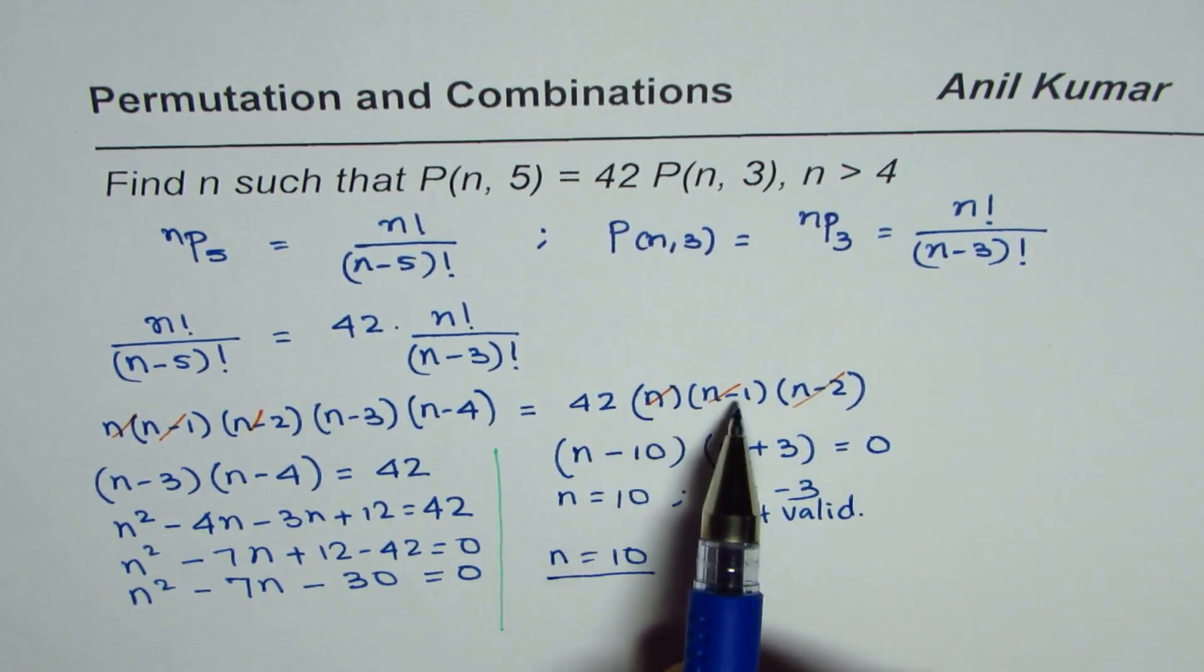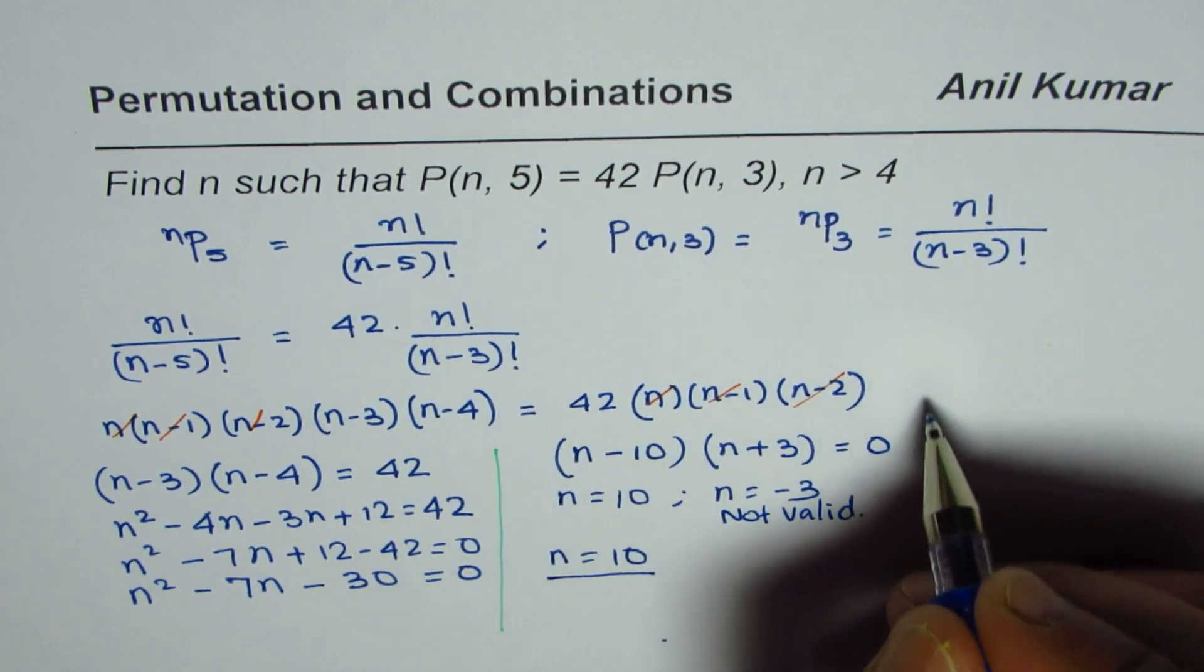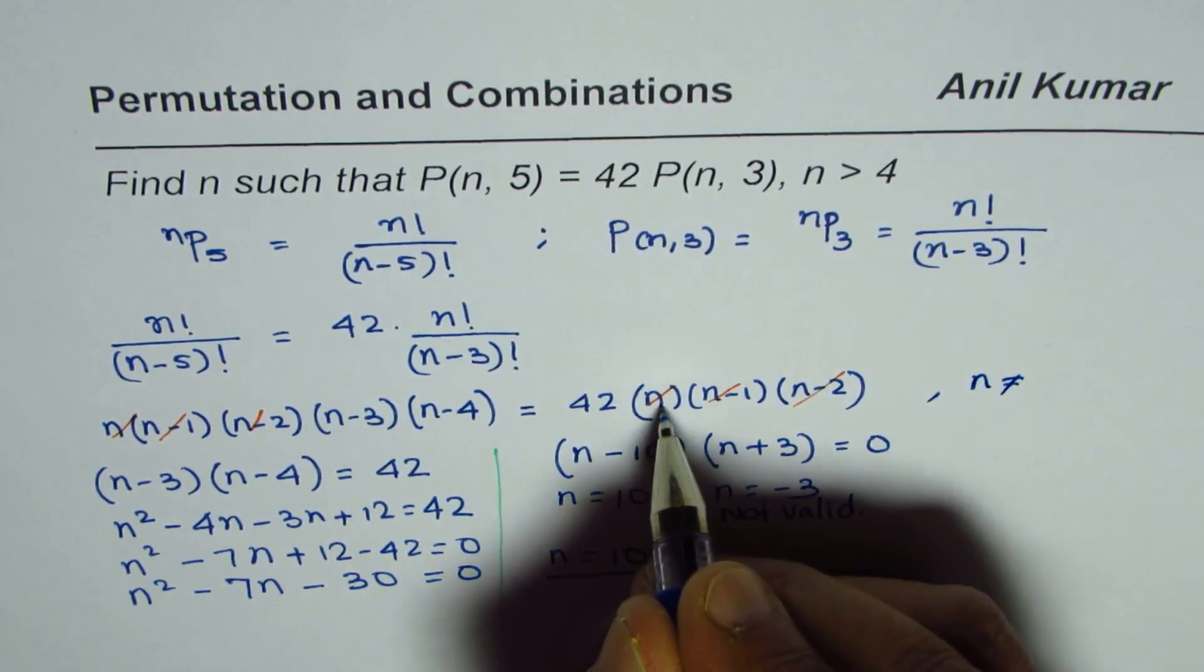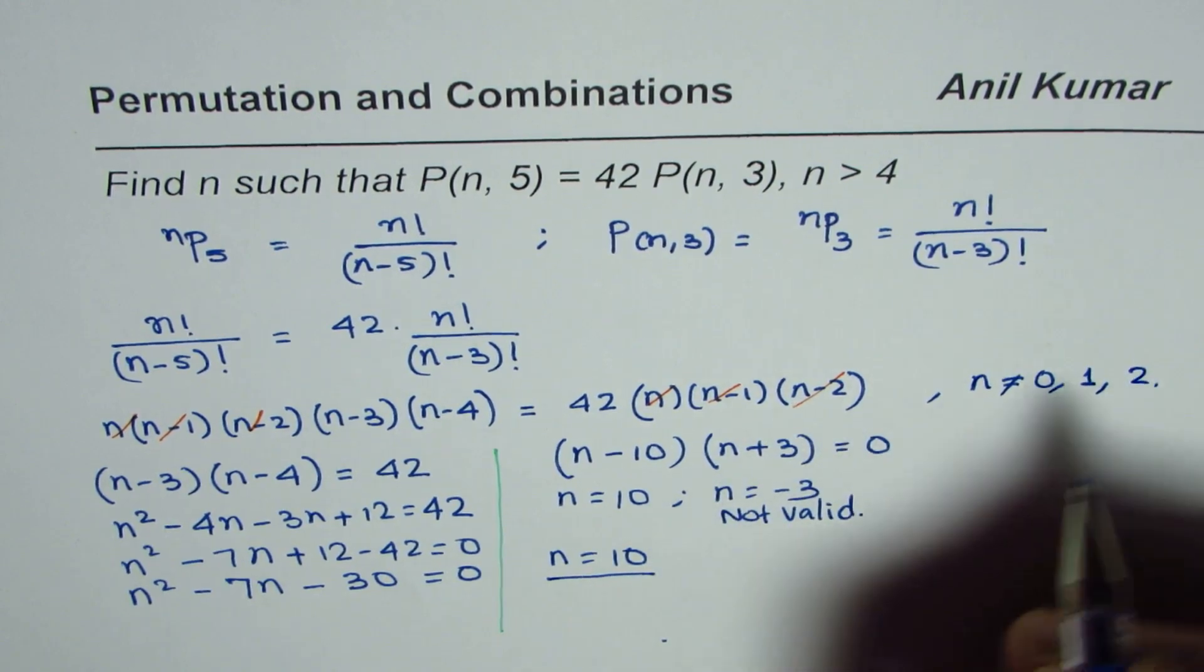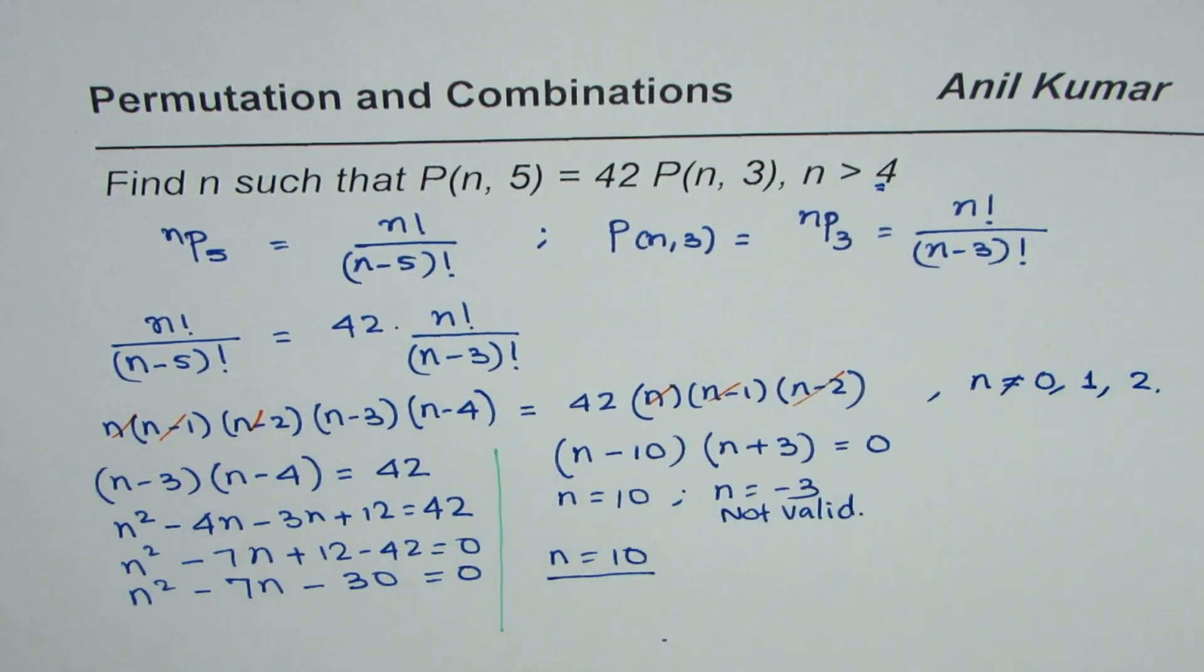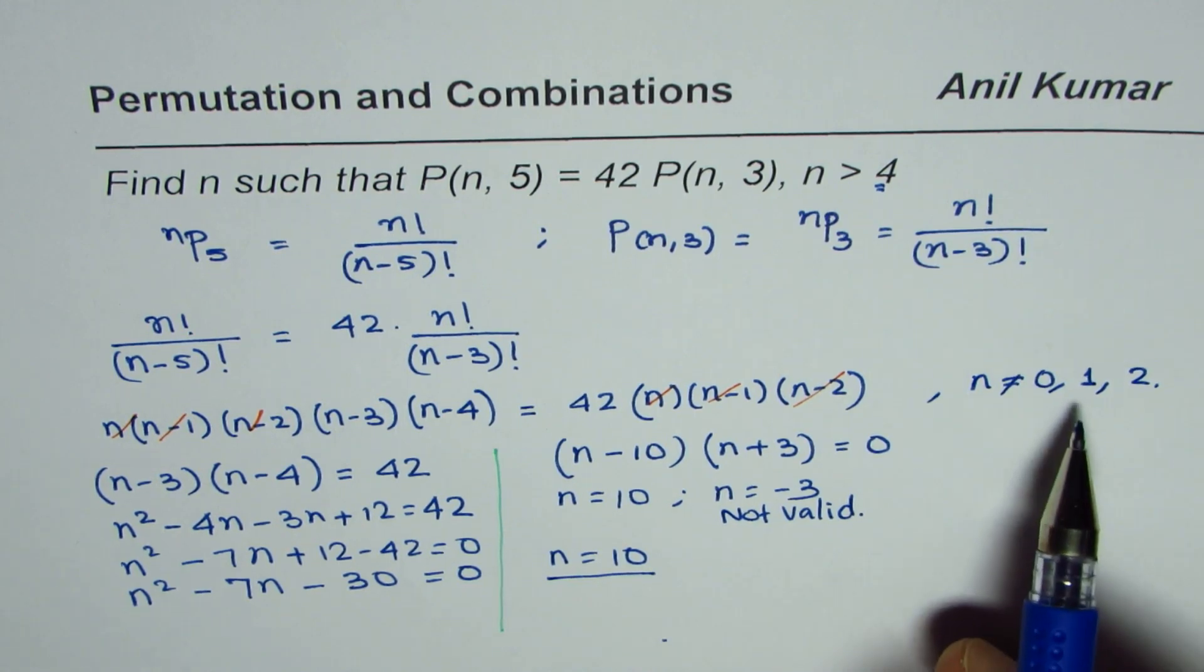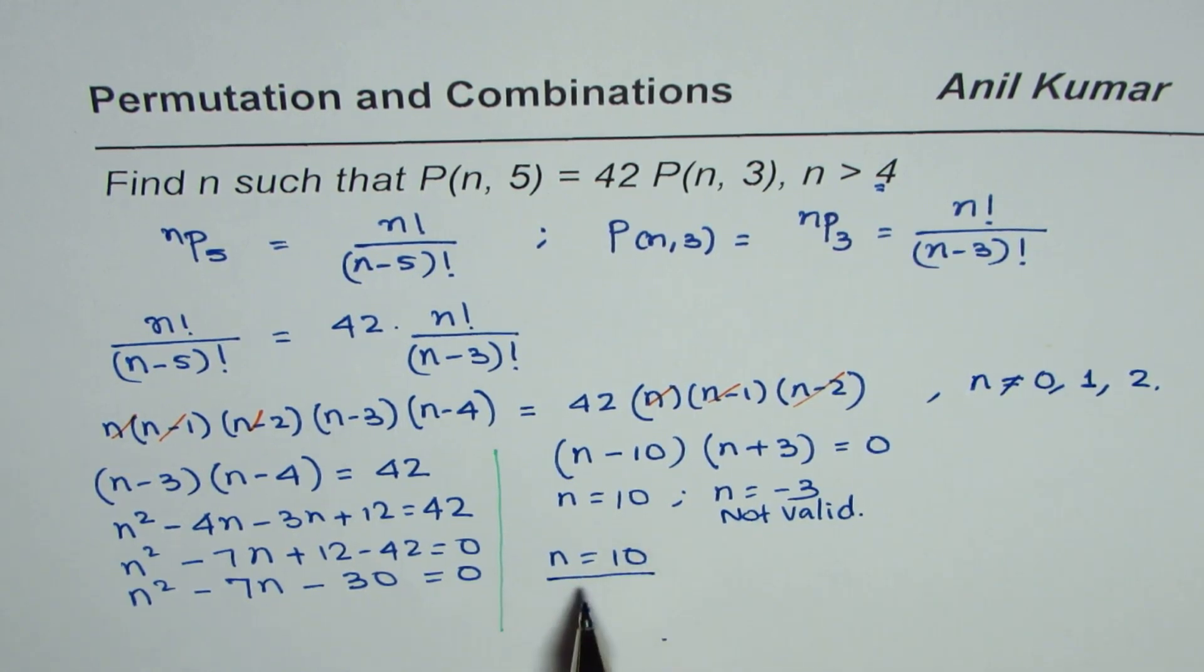Remember, when you are dividing by these numbers, we should have written here that n is not equal to 0, is not equal to 1, nor is it equal to 2. Well, we did not because n is already given to us as greater than 4, so it is already covered. Anyway, so the solution is n equals 10 for this example. I hope that helps. Thank you.